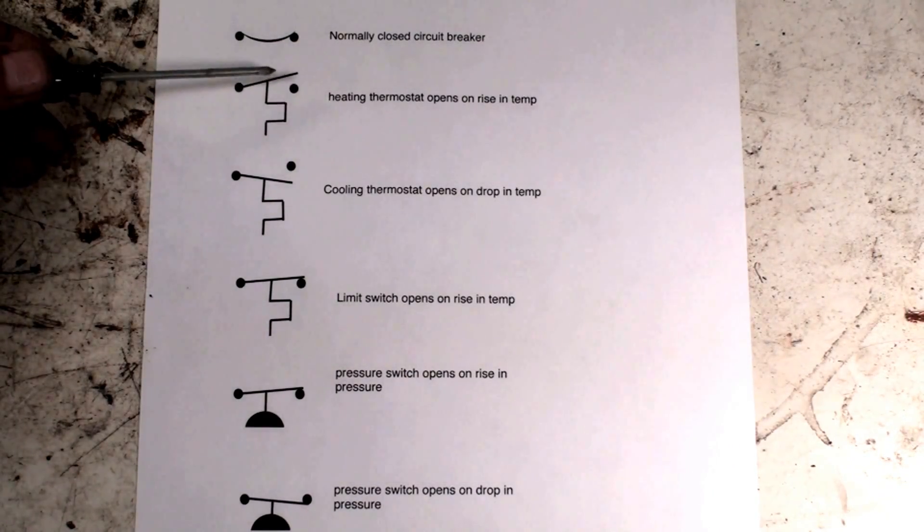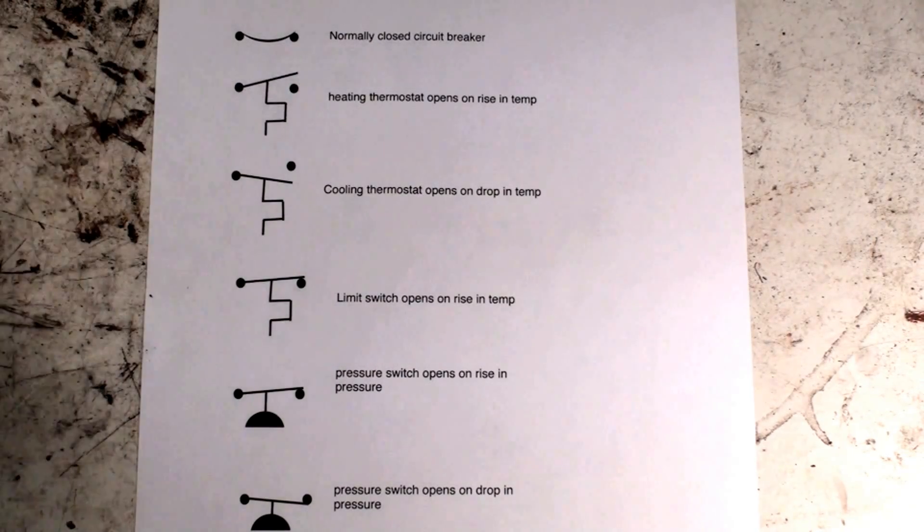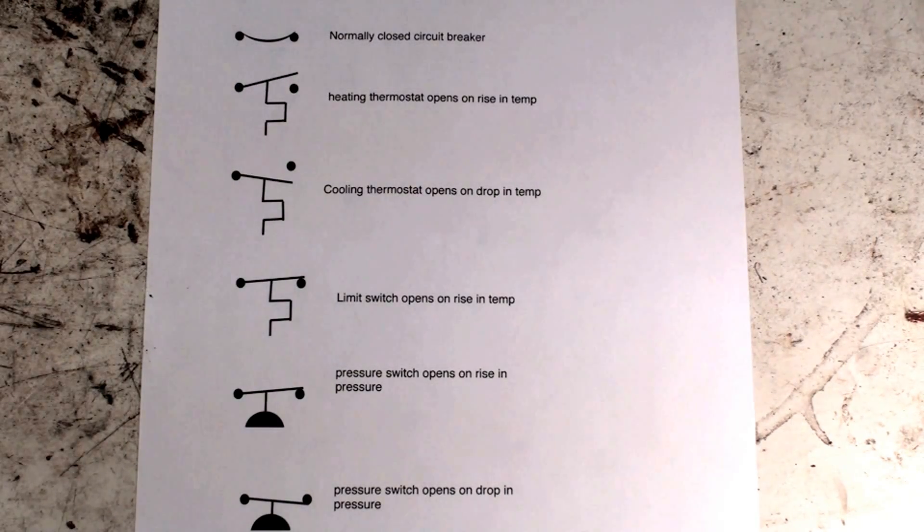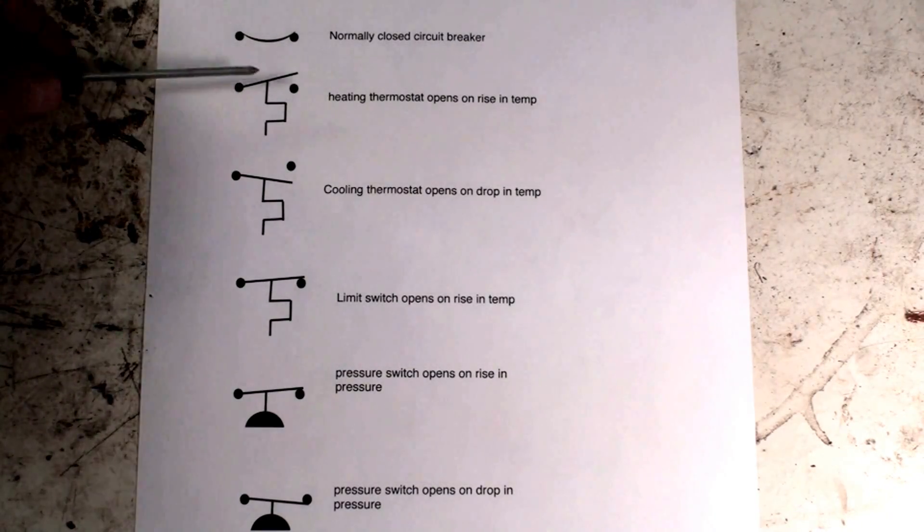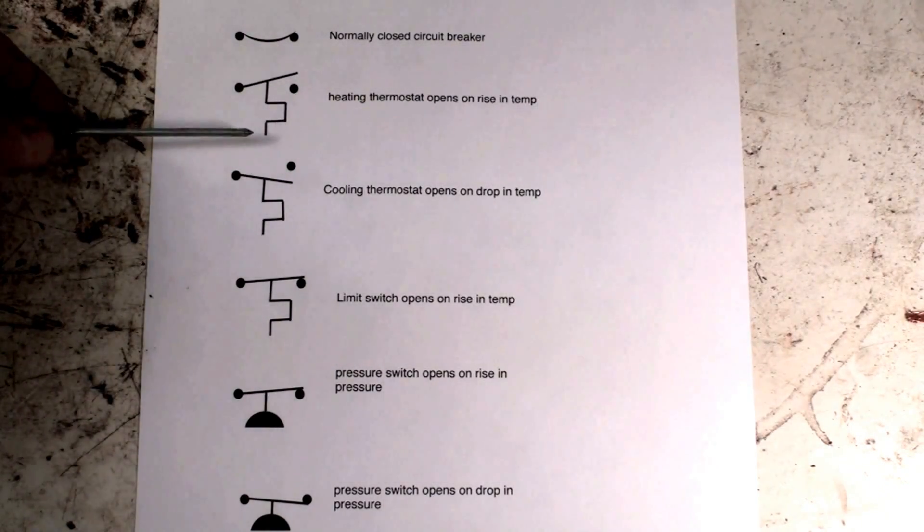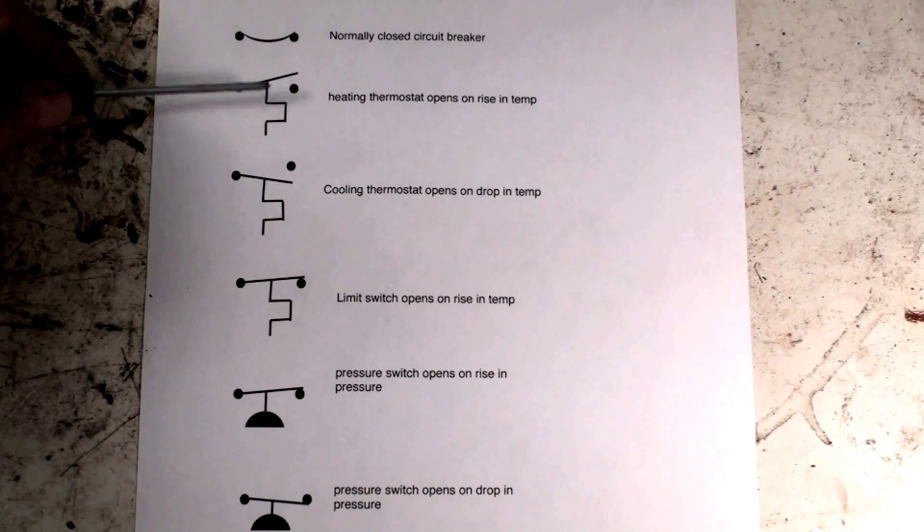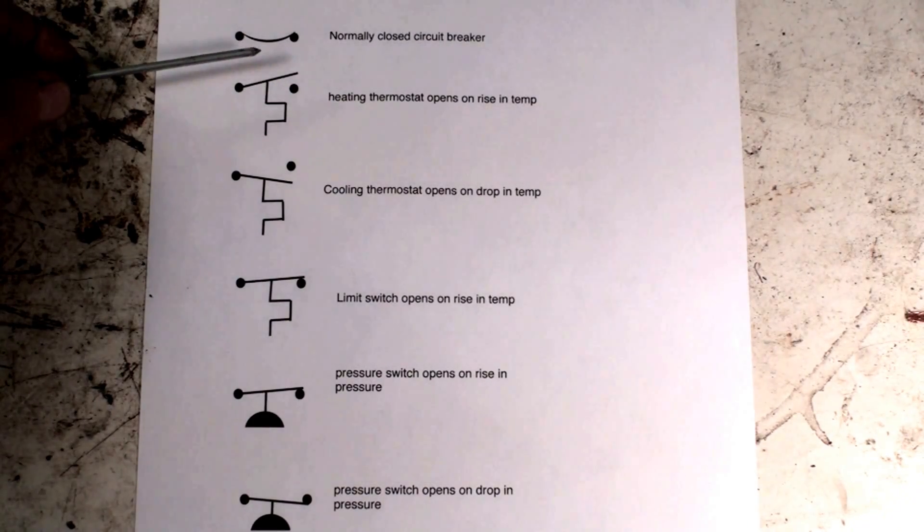Now this is an operating thermostat because it's shown in the open position. As I go through these things, I'm telling you how most diagrams are set up. I would not guarantee every diagram is going to be the same - it would be nice if it was the same, but they're not. You're just going to have to tough out some of these things because they have different designations sometimes. But these are just general ones that are usually fairly close. Anyway, if it's got this little squiggle on it, it is operated by temperature. It's a heating thermostat - it opens on a rise in temperature.